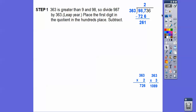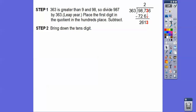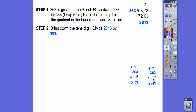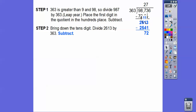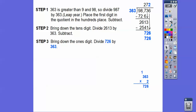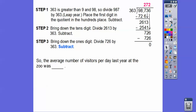We bring down the next digit to get 2,613. Thinking of 363 as close to 400, and 2,613 as close to 2,400, we try 6 and 7. 363 times 6 is 2,178; 363 times 7 is 2,541, which fits. We put 7 in the quotient and subtract to get remainder 72. Bringing down the last digit 6 gives 726. 363 times 2 is 726, so we subtract and get 0. The answer is 272 visitors per day.